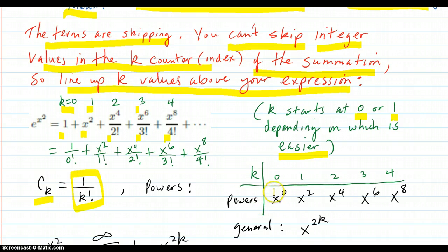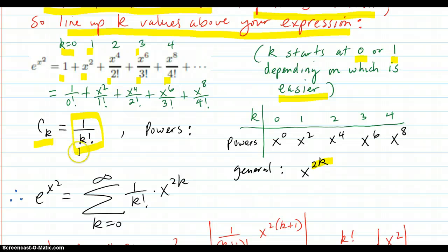For the powers, here's the k's: 0, 1, 2, 3, 4. Powers are 0, 2, 4, 6, 8. So it looks like x to the 2k will work. So you put it together, coefficients with the powers, and you get e to the x squared equals k equals 0 to infinity of this.